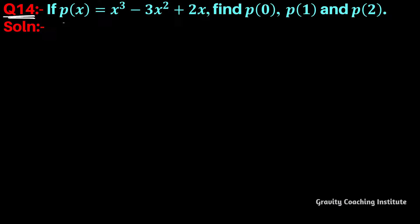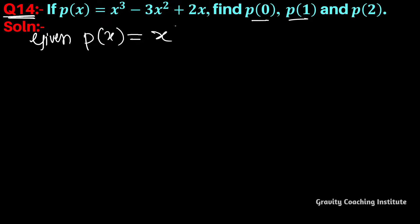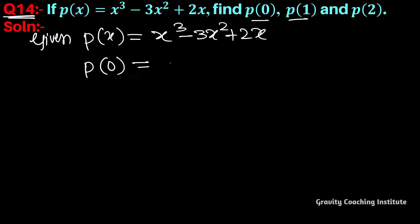Question number 14: if p(x) = x³ - 3x² + 2x, find p(0), p(1), and p(2). So here p(x) is equal to x³ minus 3x squared plus 2x, and we find p(0), so substituting x = 0.